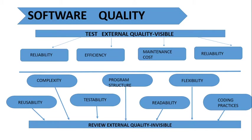To check whether software has quality, we perform an external quality review. External quality review requires: reliability, efficiency, maintenance cost, reusability, complexity, testability, program structure, readability, flexibility, and good coding practices.